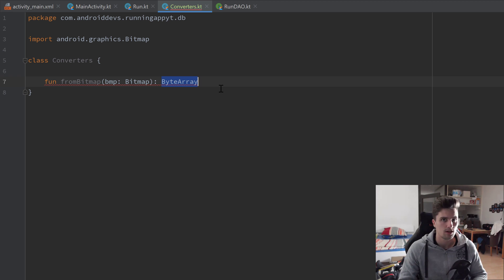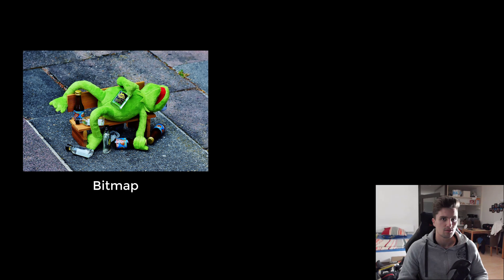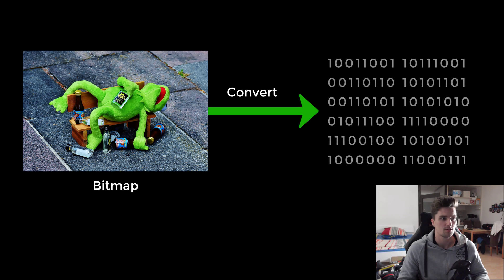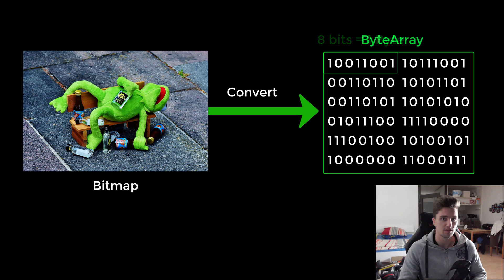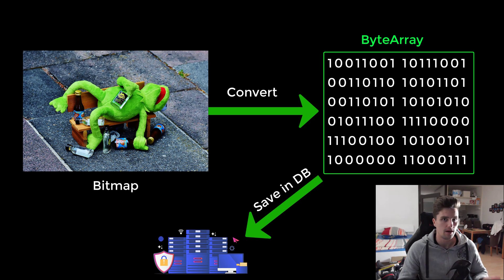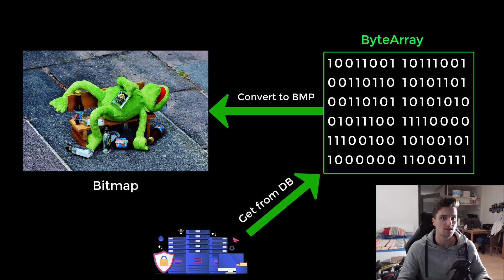You might not really understand what it means to convert something to and from a ByteArray — I didn't either when I first learned about it. What we're doing is taking our Bitmap and converting it to its raw bytes, because at the lowest level of a computer everything is saved as zeros and ones, and eight of those make up a single byte. That format can be saved in a database, but we also need the reverse function toBitmap, which explicitly tells the computer to interpret those bytes as a Bitmap object.